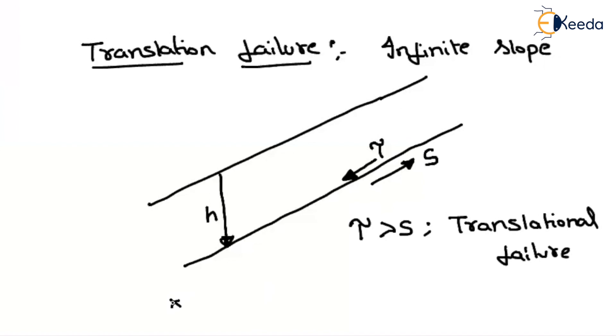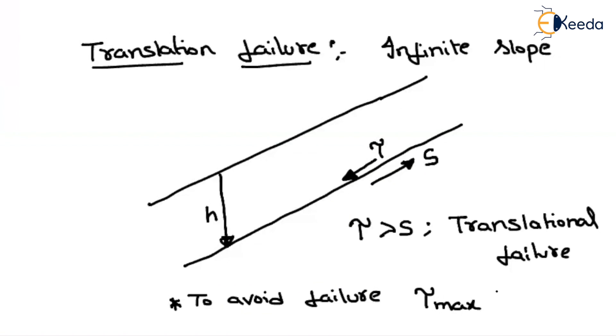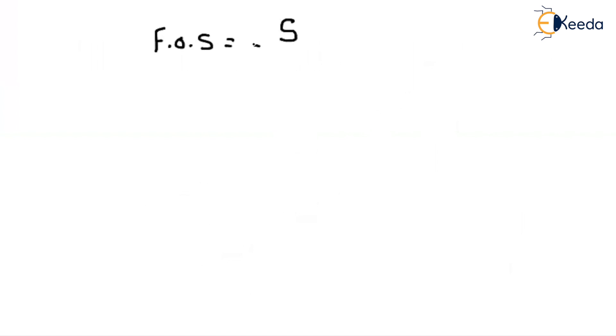To avoid translational failure, the maximum shear stress acting on the infinite slope should be less than the shear strength capacity of the soil. Let us find out the factor of safety, which is nothing but shear strength divided by shear stress — that is S divided by tau.